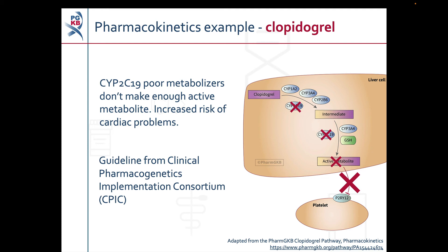Now we are going to come back to our clopidogrel example. We said earlier that the enzyme CYP2C19 converts clopidogrel to its active metabolite. If a patient taking clopidogrel is a CYP2C19 poor metaboliser — meaning they have very little to no CYP2C19 activity — they won't make enough of clopidogrel's active metabolite. This means that the platelets in these patients aren't prevented from sticking together, and as a result these patients are at an increased risk of cardiac problems. The Clinical Pharmacogenetics Implementation Consortium, also known as CPIC, has a clinical guideline with recommendations on prescribing clopidogrel to patients with different CYP2C19 metaboliser phenotypes. Links to an annotation of this guideline on PharmGKB and a video tutorial are in the description below this video.